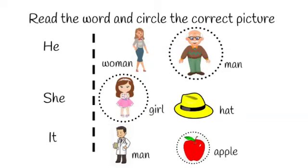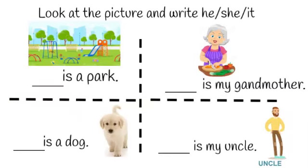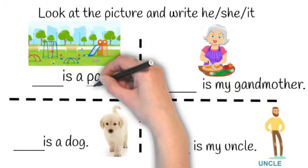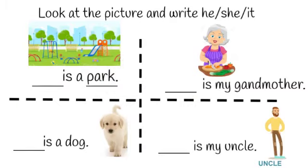Now let's see some more examples in a different way. Look at the picture and write he, she, or it. The first picture is a picture of a park. Park is a place, so for a place, as I told you, we write it. So we will write it is a park.